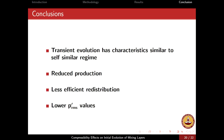To summarize: the transient evolution during the interim regime is more or less similar to what is observed in the self-similar regime. It is the reduced production which is responsible for lower TKE levels and lower turbulence, and ultimately the slower growth rate of the mixing layer. This is due to less efficient redistribution at higher Mach numbers, caused by lower RMS pressure fluctuations.